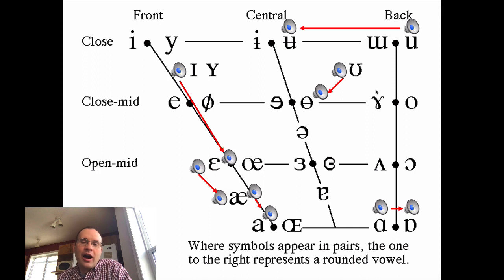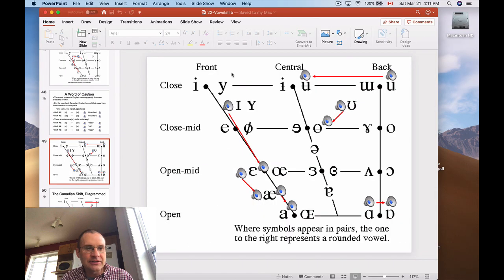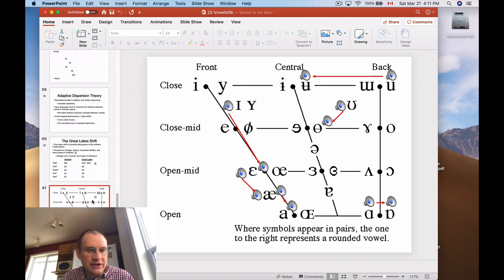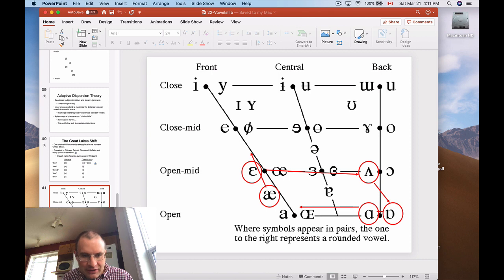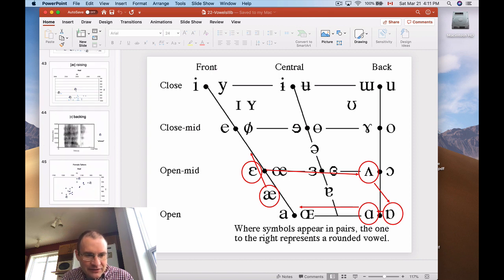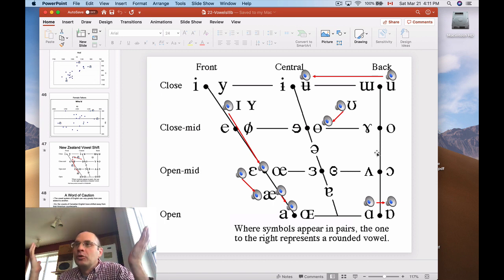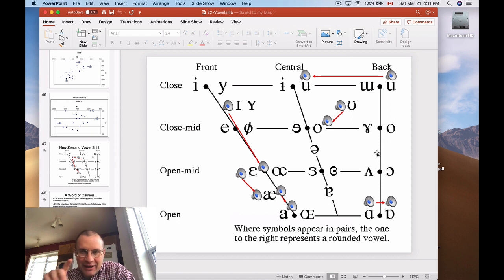All these shifts are kind of moving in a counterclockwise direction, which is interesting. Going back to the Great Lakes shift, all of those shifts were in the clockwise direction, and all the Canadian shifts are in a counterclockwise direction. So it's kind of the opposite pattern of what we get across the border, which is kind of funny. Maybe Canadians are trying harder to sound not like Americans — who can blame them. Either way, there's a systematic pattern we can find in the vowel shifts altogether.